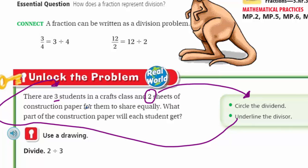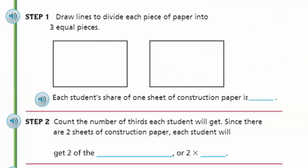Now, use a drawing. Divide two divided by three. Step one says, draw lines to divide each piece of paper into three equal pieces. Because we have two pieces of construction paper, and we're dividing it equally. Let's see if I can pull this off here. In three equal pieces. I like. And then we're going to do two over here. There we go. Much better. It looks professional. Each student's share of one sheet of construction paper is one-third.